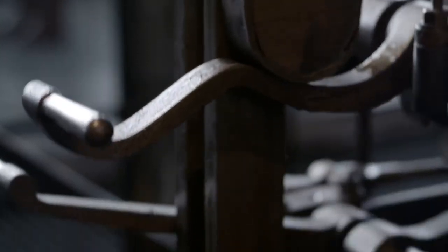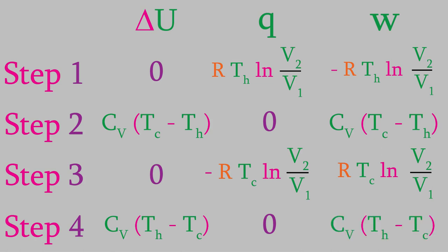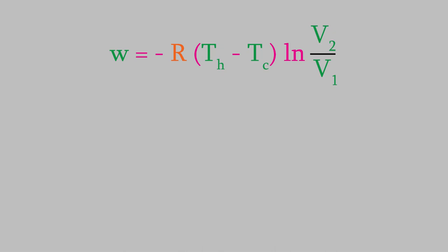Before we finish up, let's also look at the work produced in each step of the Carnot cycle. We know that the energy is equal to the sum of the heat exchange and the work, thanks to the first law of thermodynamics. Therefore, the work is negative R times TH times the logarithm of V2 over V1 for step one, CV times TC minus TH for step two, R times TC times the logarithm of V2 over V1 for step three, and CV times TH minus TC for step four. That gives us a total of negative R times TH minus TC times the logarithm of V2 over V1 for the work of the overall cycle.